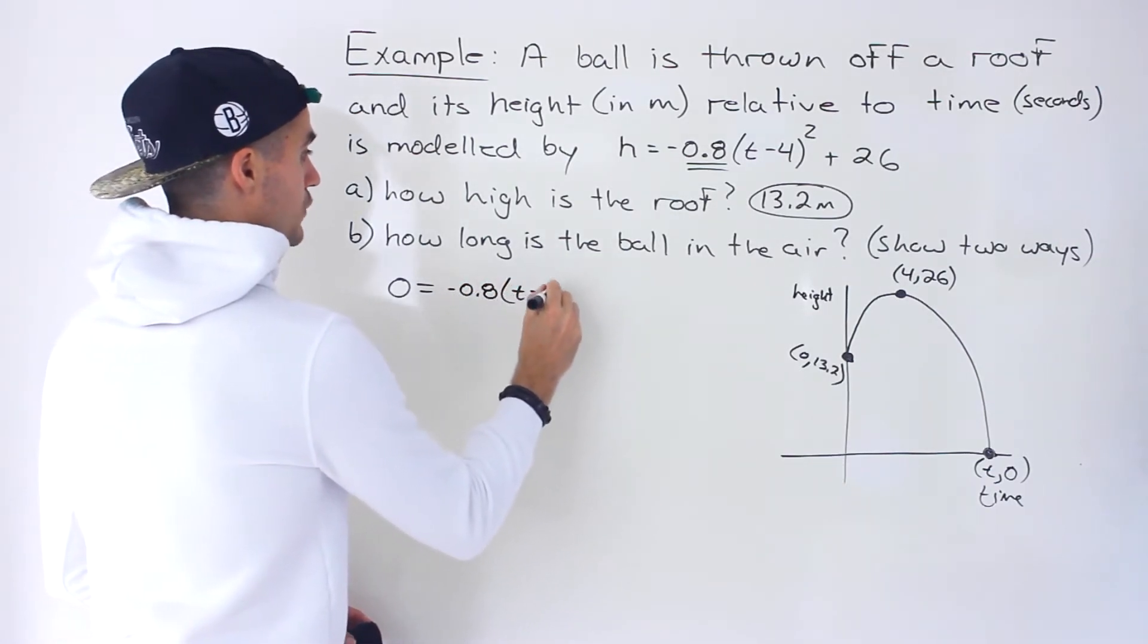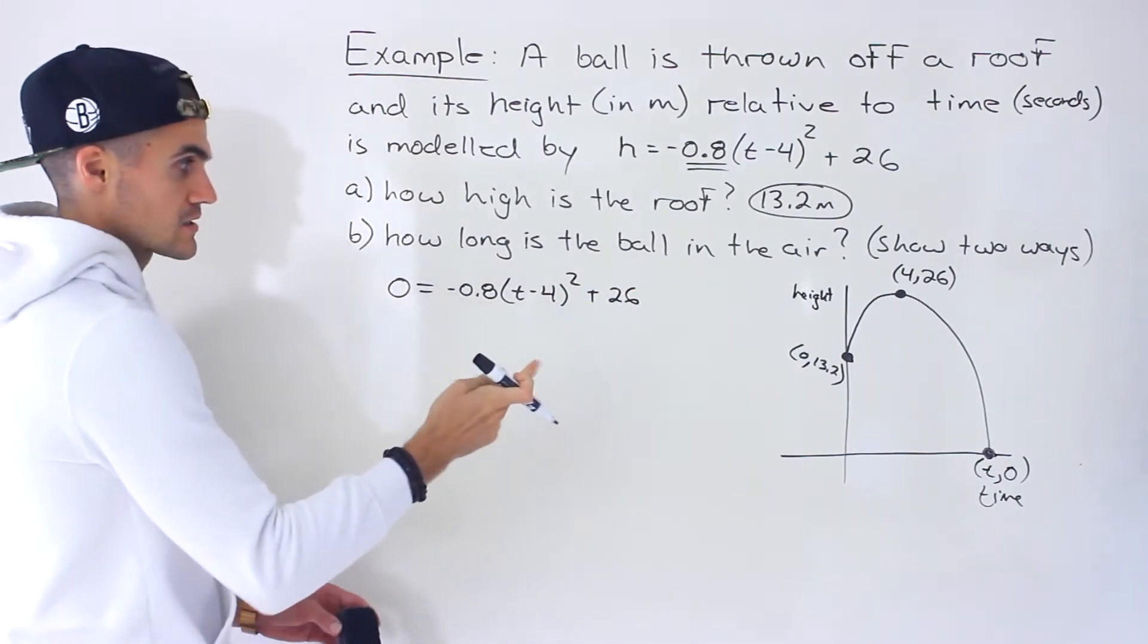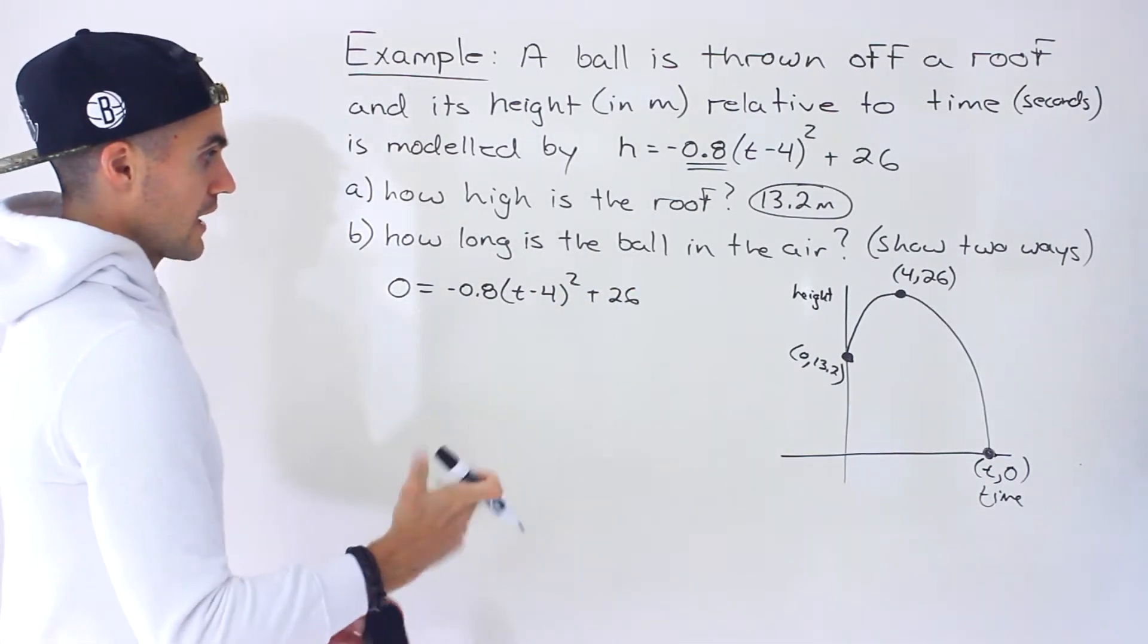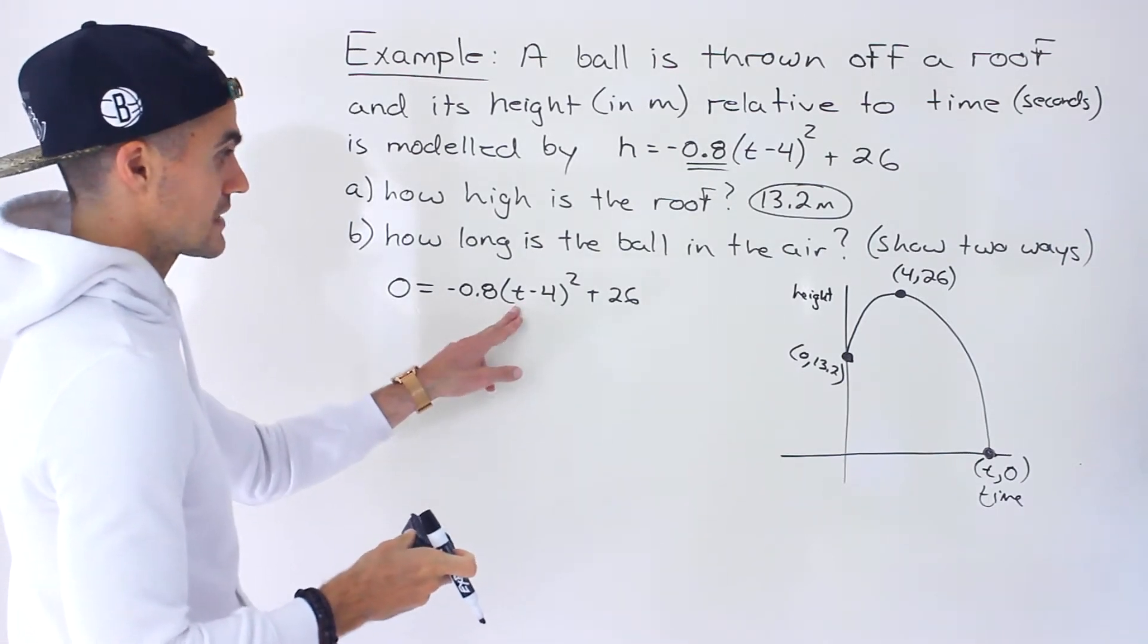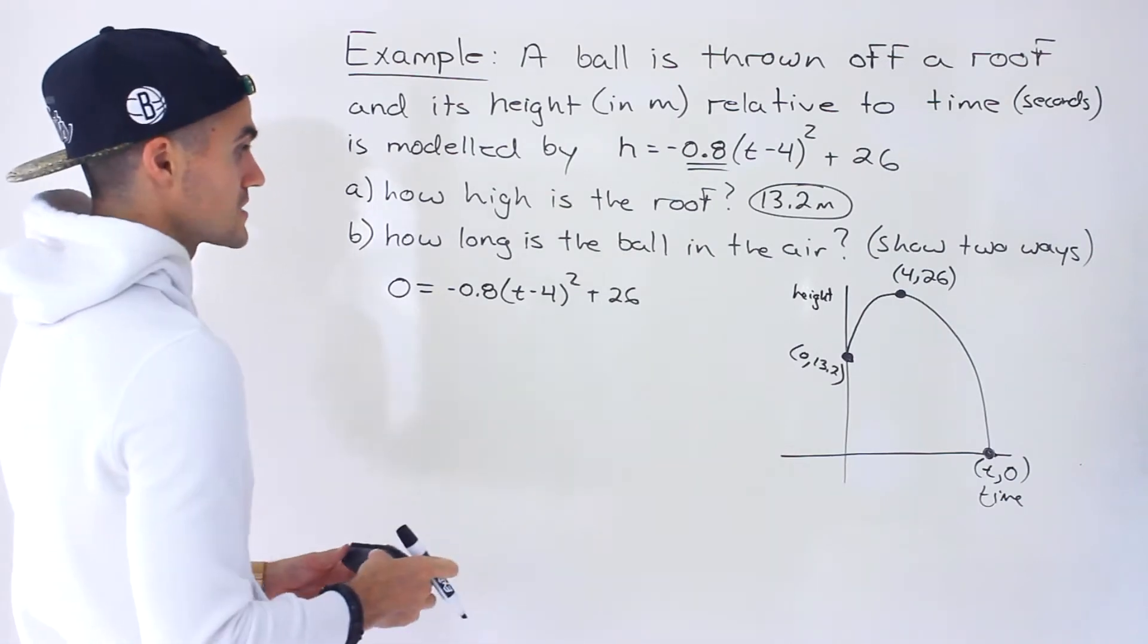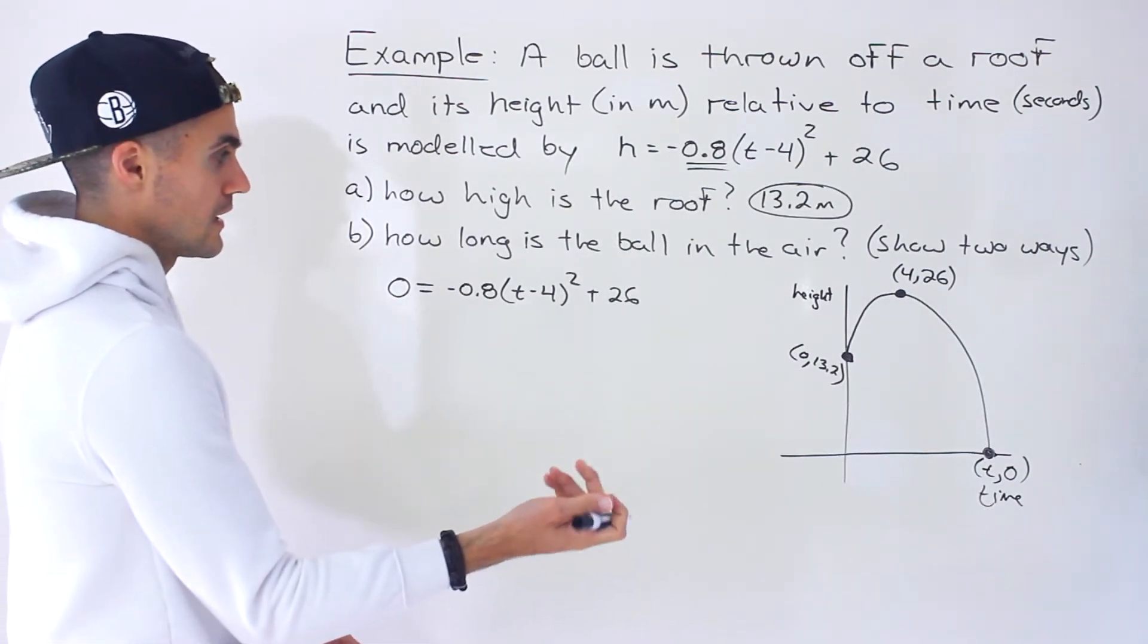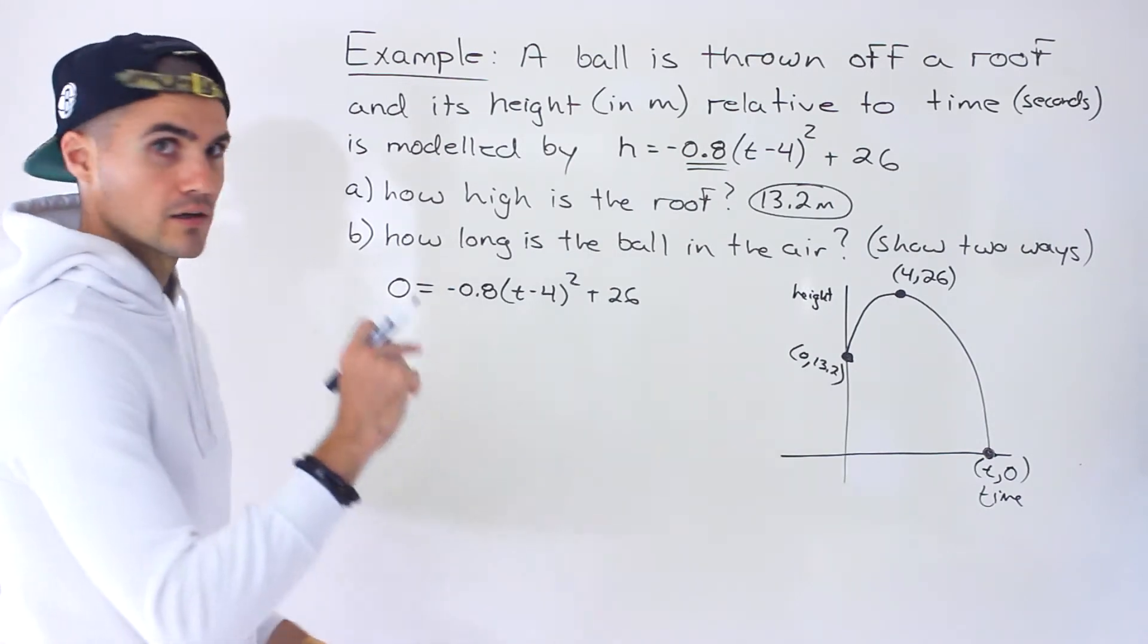Now because this is in vertex form, there's two different ways to solve this equation here. We can directly solve here for t, isolate for the t by bringing the 26 over, dividing by negative 0.8, et cetera. So that's one of the ways. The other way is we can expand everything and then use the quadratic formula.